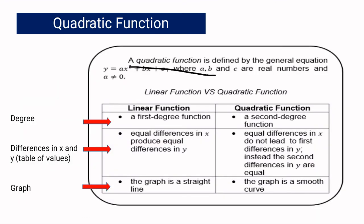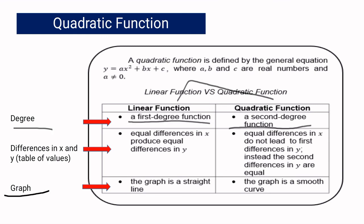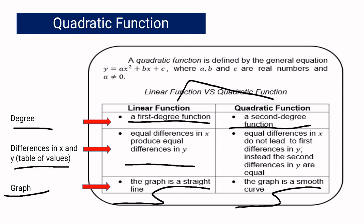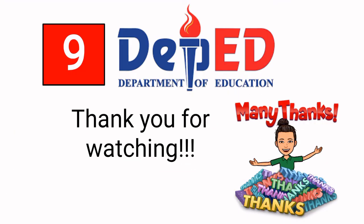To sum it up, a quadratic function is defined by the general equation y equals ax squared plus bx plus c, where a, b, and c are real numbers and a cannot equal 0. Linear functions are first-degree with a straight-line graph and equal first differences in both x and y. Quadratic functions are second-degree with a parabola graph, and equal differences in x produce equal second differences in y. That concludes competency number 10 and 11. Thank you for watching.